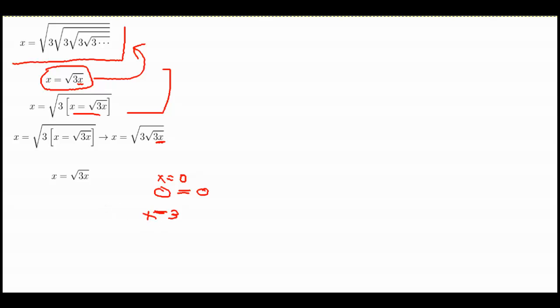With x equals 3, we see that we get 3 is equal to the square root of 3 squared. And that's a true statement, because the square root of 3 squared is just 3. So we can have x equals 0 and x equals 3 as solutions.